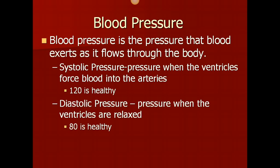The last topic we're going to talk about today is blood pressure. Blood pressure is the pressure that blood exerts as it flows through the body. There are two different types of blood pressure. Systolic pressure is the pressure when the ventricles force blood into the arteries; a healthy number for systolic pressure is 120. Diastolic pressure is the pressure that occurs in the circulatory system when the ventricles are relaxed; a healthy diastolic pressure is around 80.